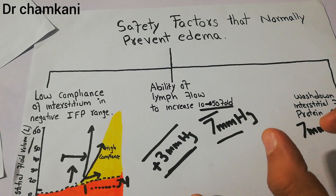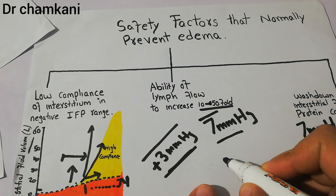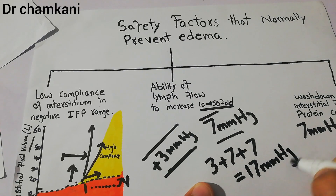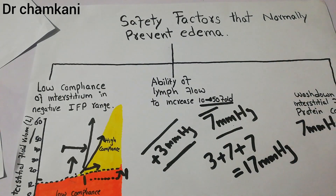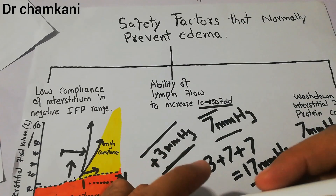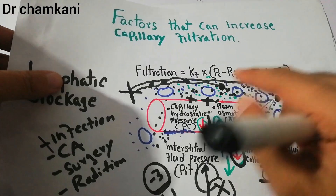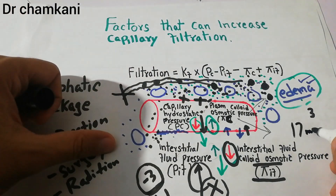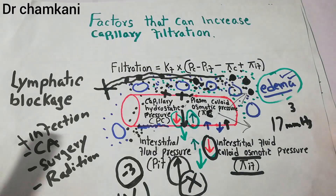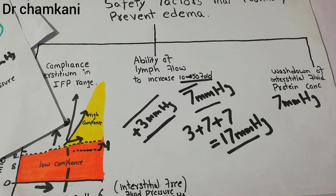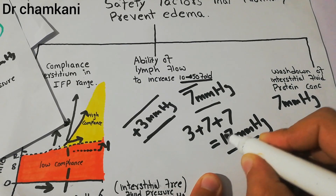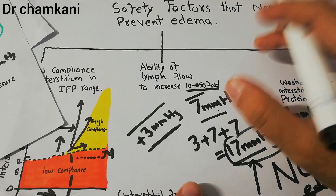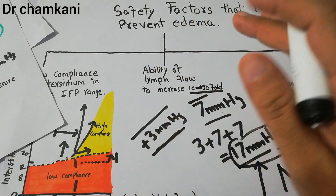If all three safety factors are combined, 3 plus 7 plus 7 equals 17 mmHg. The combined safety margin is around 17 mmHg, meaning capillary hydrostatic pressure may increase by around 17 mmHg above normal and still no edema would occur, due to the combined effect of these three safety factors.